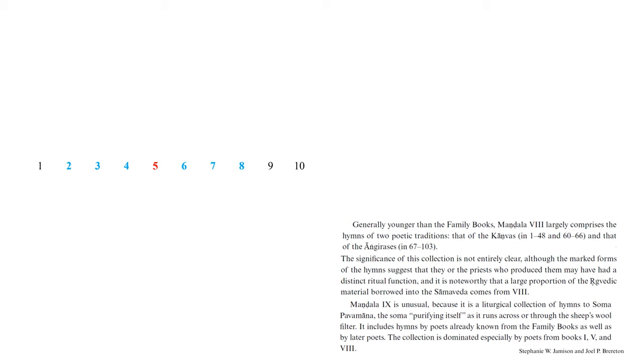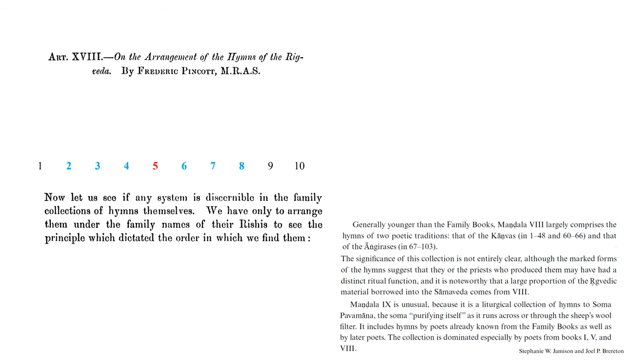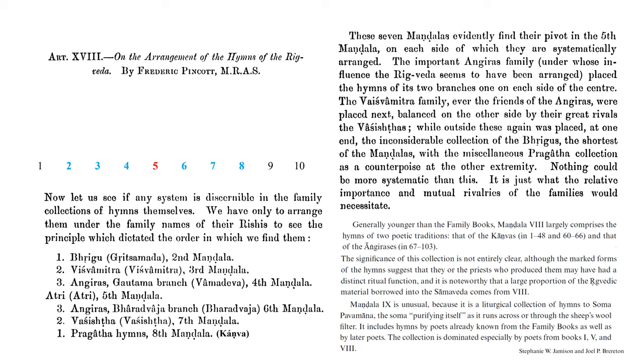Now, mandala 8, Jameson and Brereton write, is generally younger than the family books. Mandala 8 largely comprises of hymns of two poetic traditions, that of the kanavas and of the angirases. The significance of this collection is not entirely clear, although the marked forms of the hymns suggest that they or the priests who produce them may have had a distinct ritual function. And it is noteworthy that a large proportion of the Rig Vedic material borrowed into the Samaveda comes from Book 8.